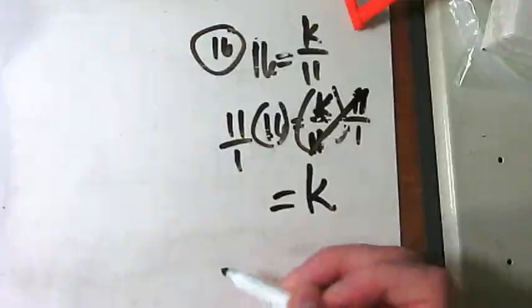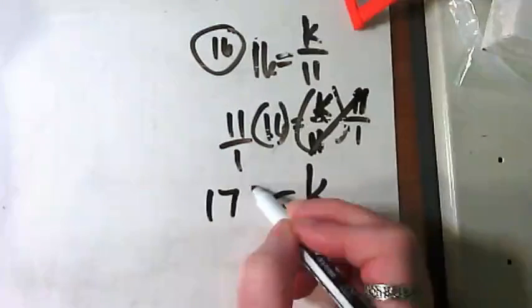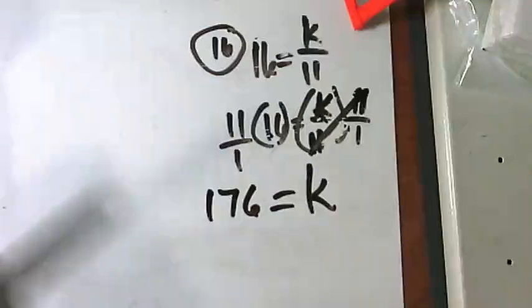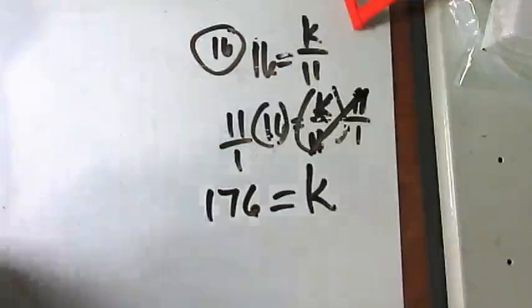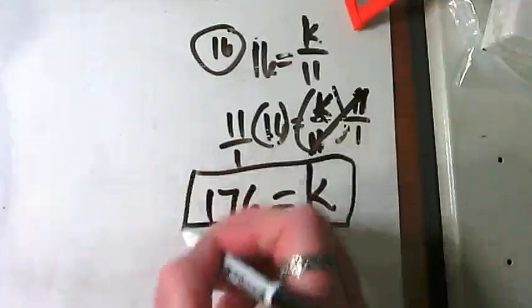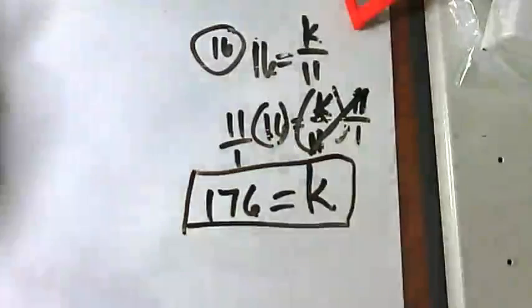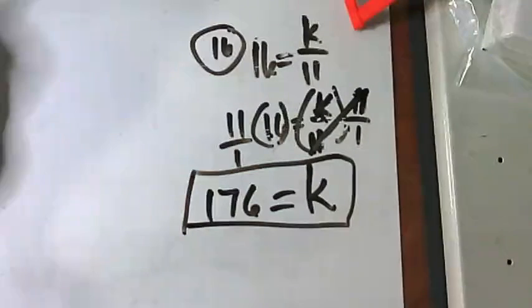And 11 times 16? 11 times 17. Good job. I used the calculator. Did you? You just step there and calculate it. 176 equals K.